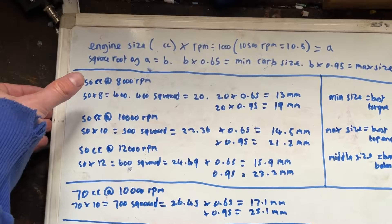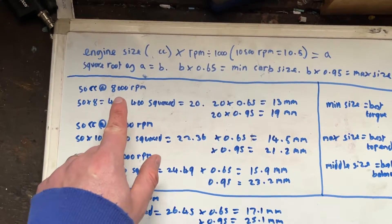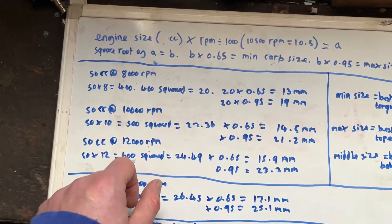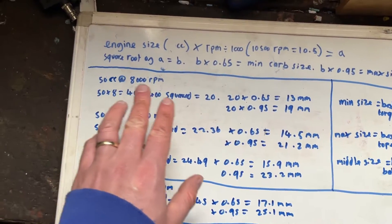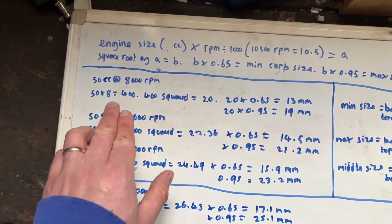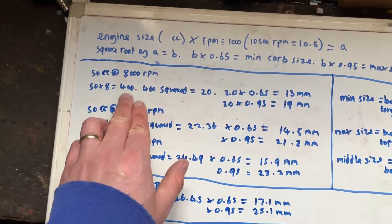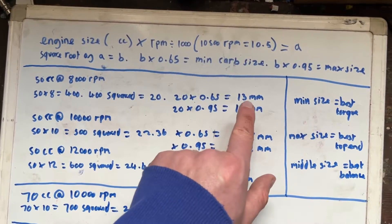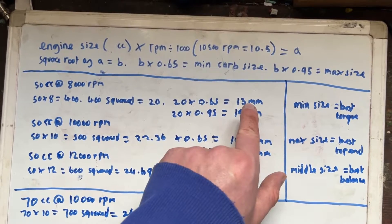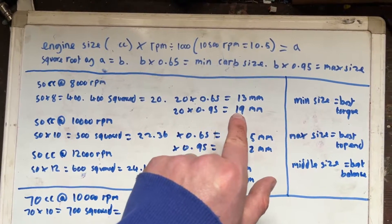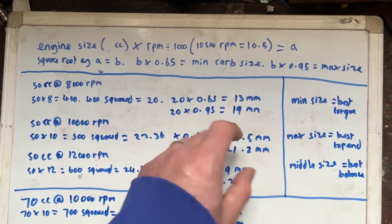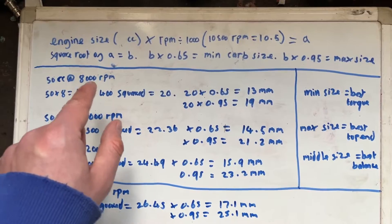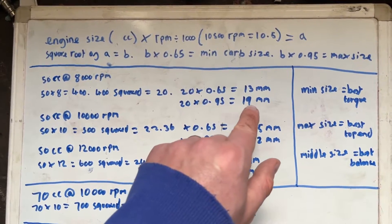So here we have a 50cc cylinder with a maximum RPM of 8,000. So this would be like a standard 50cc scooter, de-restricted. So we've got 50 times 8, because 8,000 RPM gives us 400. Then we take the square root of that which gives us 20. So 20 times 0.65 gives us a minimum of 13 millimeters and then times 0.95 gives us a maximum of 19 millimeters. So now what we've got, we've got a minimum sized carburetor required for this scooter to run at that RPM and we've got a maximum size.